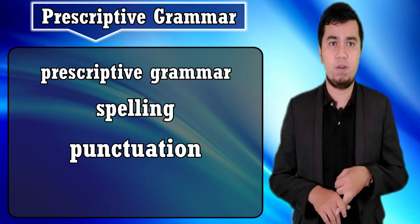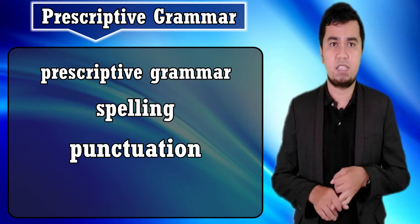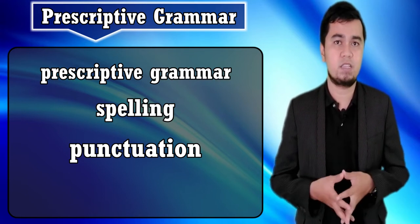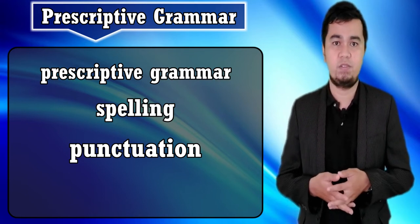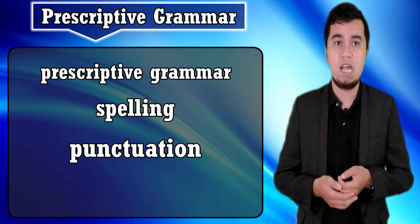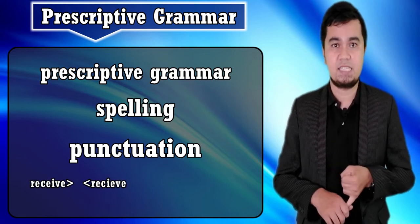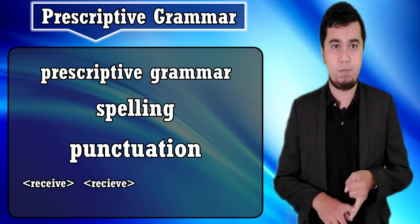One area where prescriptive grammar still thrives is spelling and punctuation, where everyone believes there is a single correct form. There is a single correct spelling for every word — for example, 'receive' is spelled as 'receive,' not otherwise.